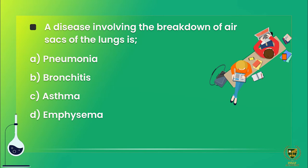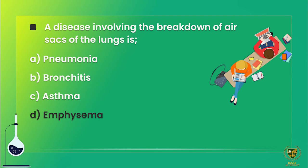Option A pneumonia — no, that is just an infection, alveoli ka breakdown nahi hota. Bronchitis is the inflammation of bronchi and bronchioles. Asthma is an allergic reaction. Option D emphysema — yes, that is correct. Emphysema ke andar jo air sacs hote hain, jinhe alveoli kehte hain, unka breakdown hota hai. So correct option is delta: emphysema.